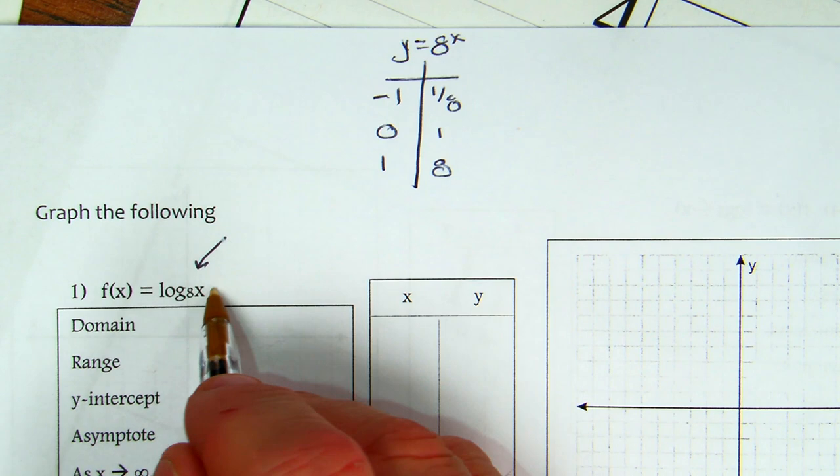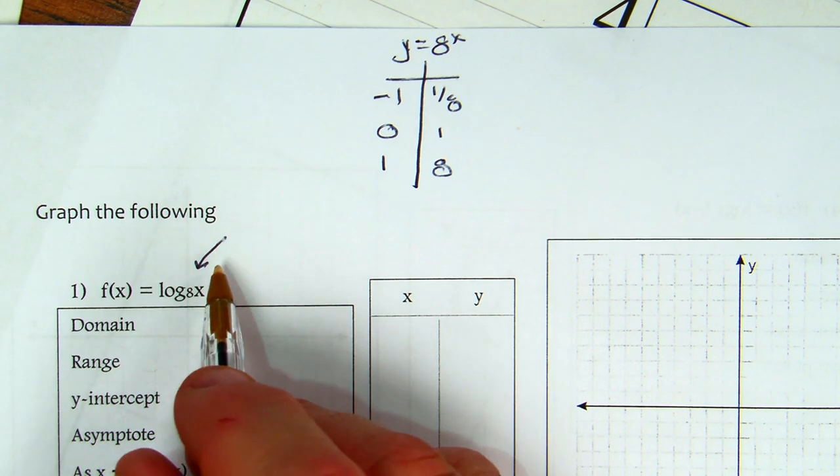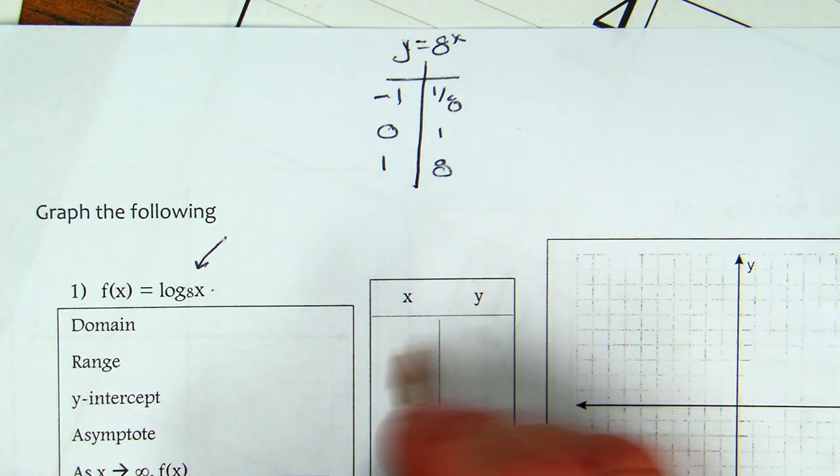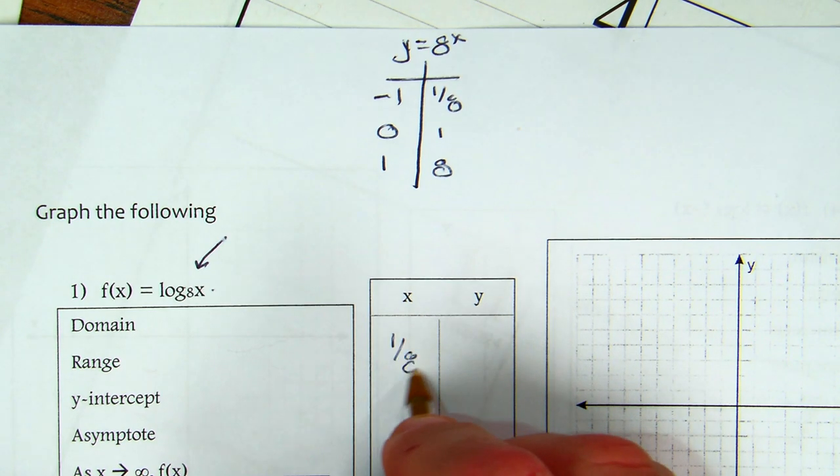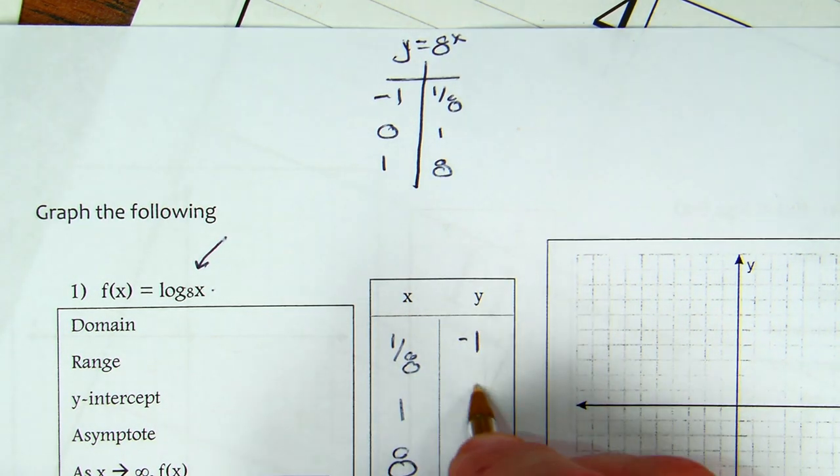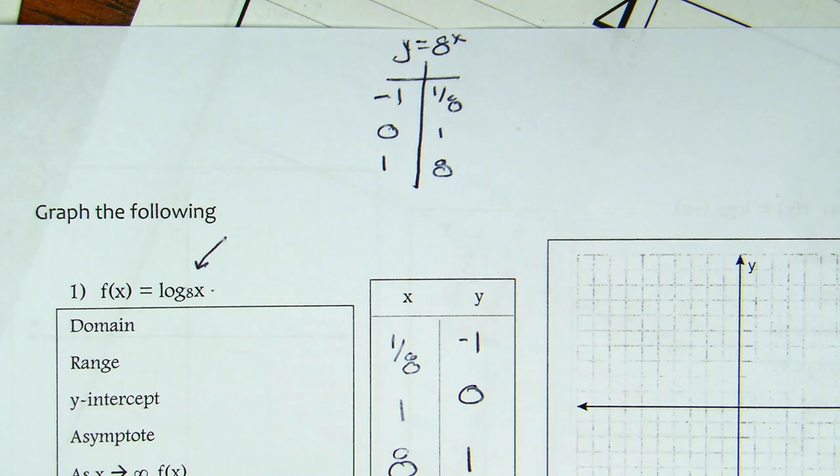Now, pretty straightforward, log 8 of x, nothing being added, nothing being subtracted, so all we're going to do is come down and flip our x's and y's: negative 1, 0, and 1, and that's it.